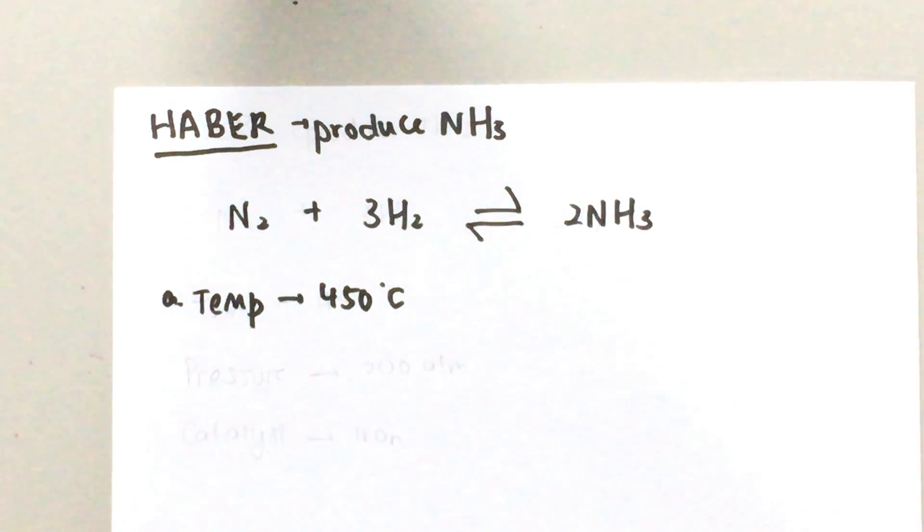But the thing is if the temperature is too low the reaction is going to be too slow. So therefore we use an optimum temperature of 450 to make sure we get enough yield and also the reaction is not carried out too slowly.